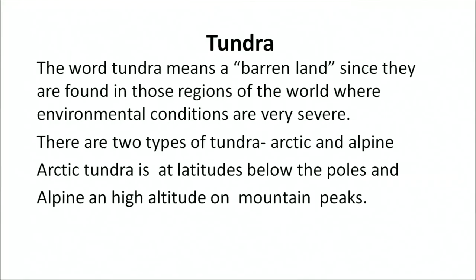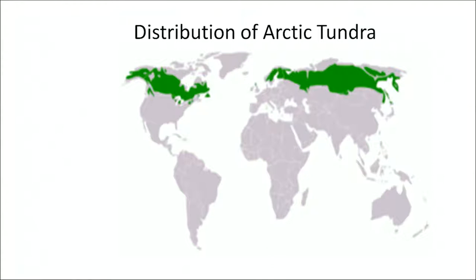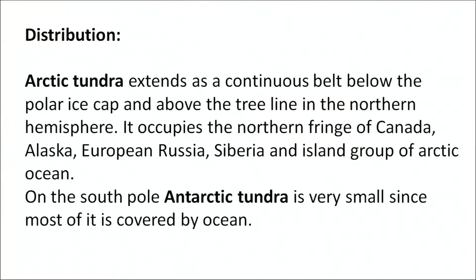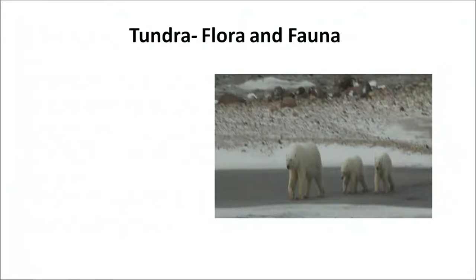Tundra means 'barren land' and is found in regions of very severe environmental conditions. There are two types: arctic tundra, at latitudes below the poles, and alpine tundra, found at high altitudes on mountain peaks. The arctic tundra extends as a continuous belt below the polar ice cap above the tree line in the northern hemisphere, occupying the northern fringe of Canada, Alaska, European Russia, Siberia and the island groups of the Arctic Ocean. The Antarctic tundra is very small since most of the south pole is covered with ocean.